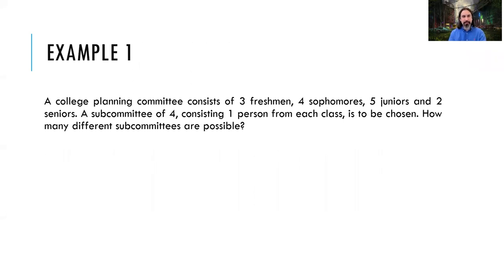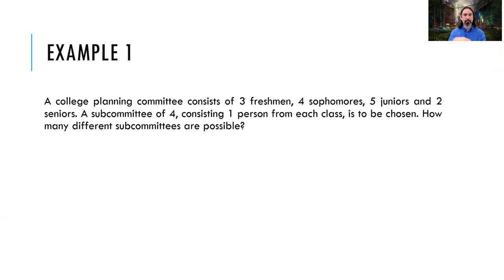For example, a college planning subcommittee consists of three freshmen, four sophomores, five juniors, and two seniors. A subcommittee of four — one person from each class — is to be chosen. We can select one from three freshmen (three outcomes), four sophomores (four outcomes), five juniors (five outcomes), and two seniors (two outcomes). So the total is the multiplication of all four values, which is 120.